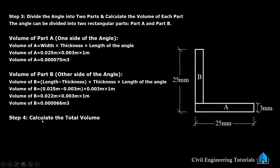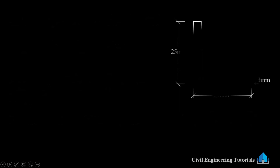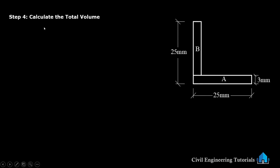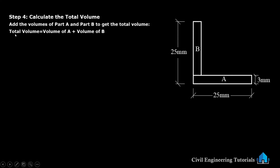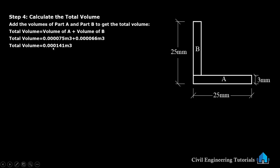Step 4: calculate the total volume by adding the volumes of Part A and Part B. Total volume = Volume A + Volume B = 0.000075 + 0.000066 = 0.000141 cubic meters.